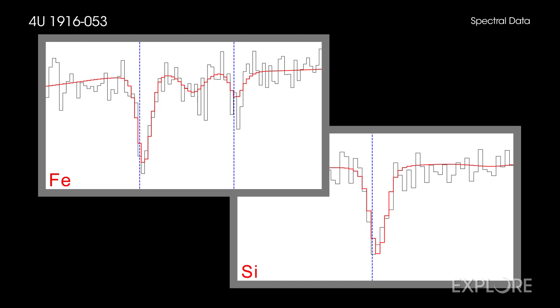The researchers found that the shift of the absorption features was the same in each of the three Chandra observations, and that it was too large to be explained by motion away from us. Instead, they concluded it was caused by gravitational redshift.